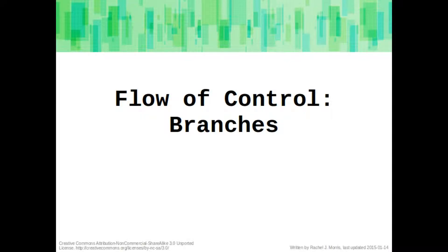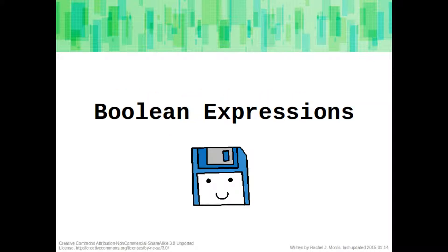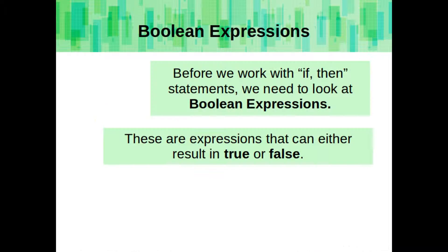Now let's get into some ways we can control the course of our program. First, we need to look at Boolean expressions. Boolean expressions are used in branches and in loops. But before we start working with if-then statements, let's look at what they are. These are expressions that can either result in true or false.